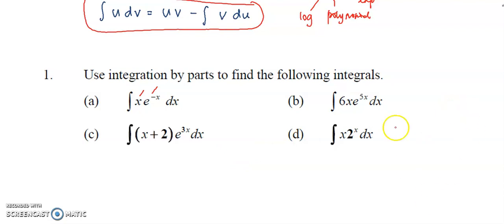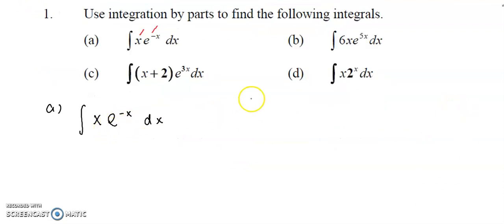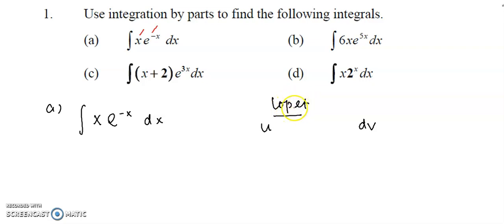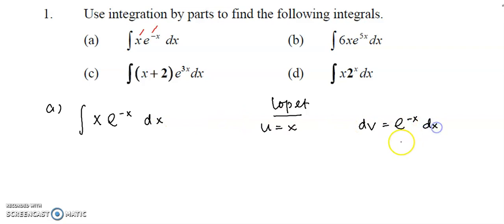Let's try one example. First, refer to LOPET. I want to set my u and dv. Which one will be u? P is polynomial, E is exponential — P comes before E, so I set u as x, which is my polynomial. The dv will be the exponential part. Whoever becomes the dv will be together with the dx — once you set u, the rest of the function, including the dx, becomes the dv.